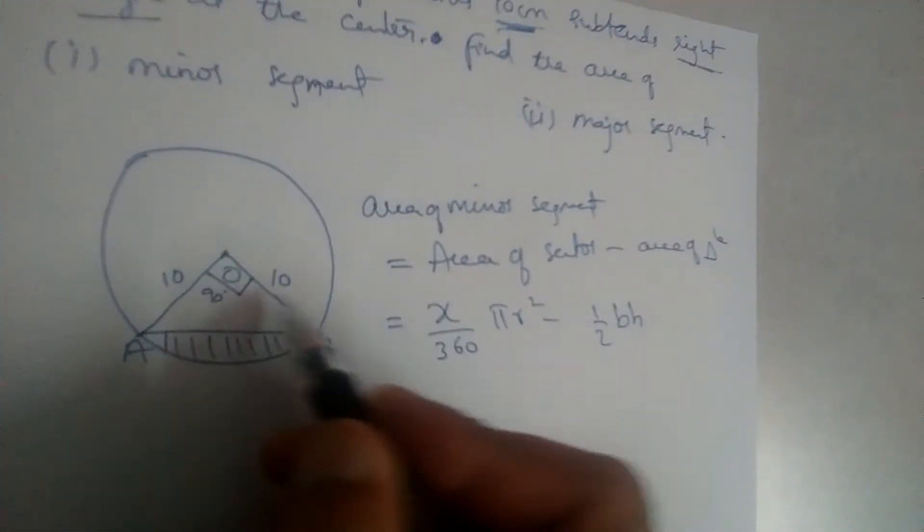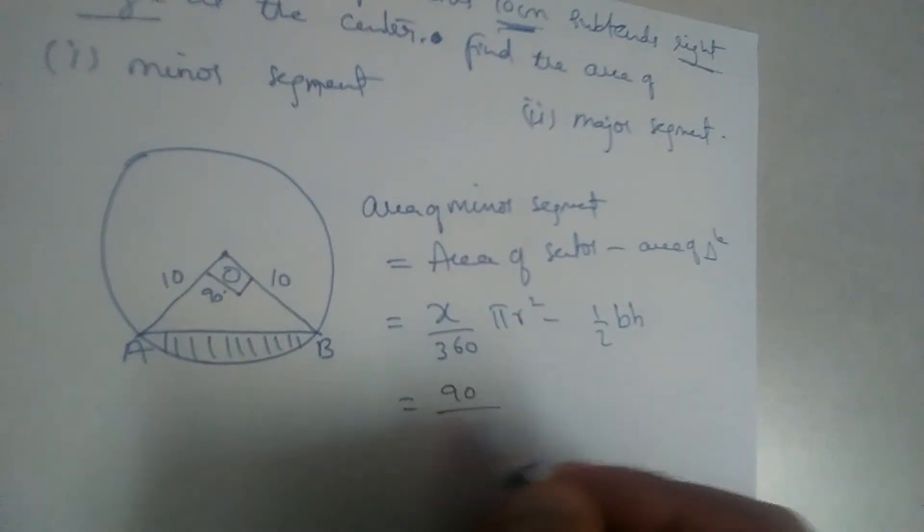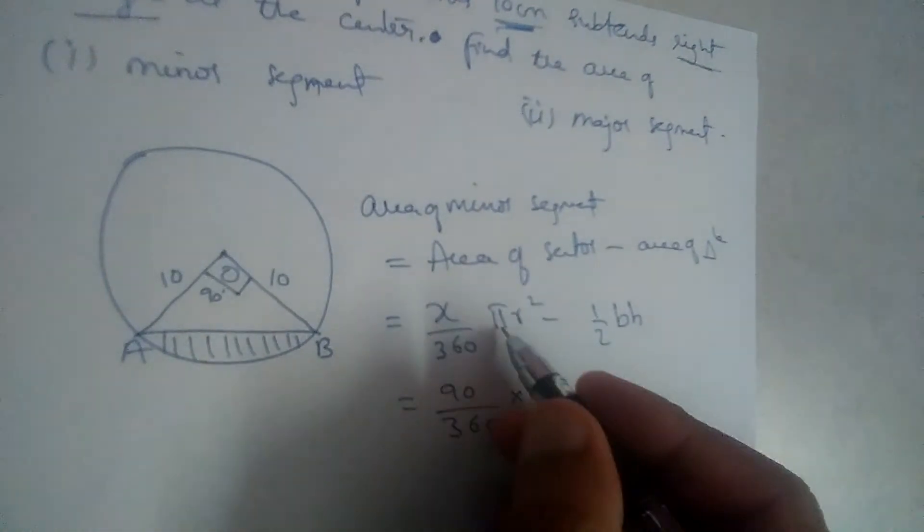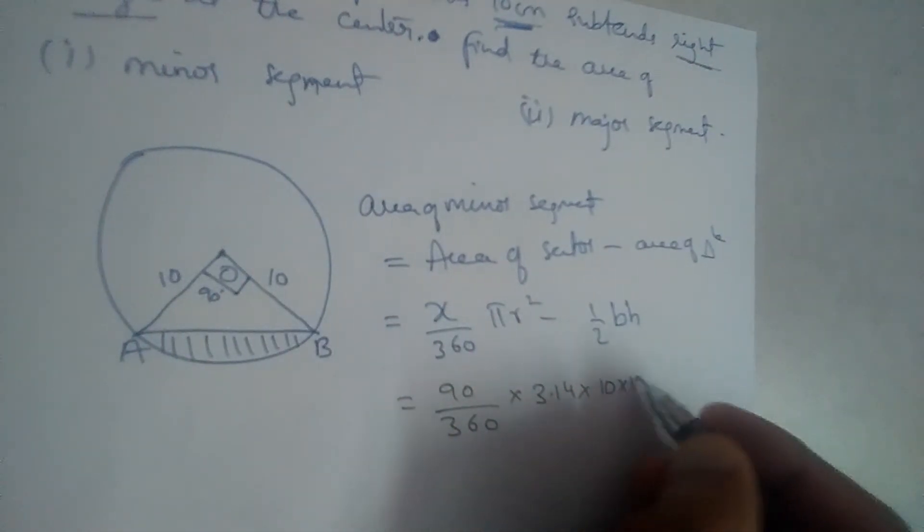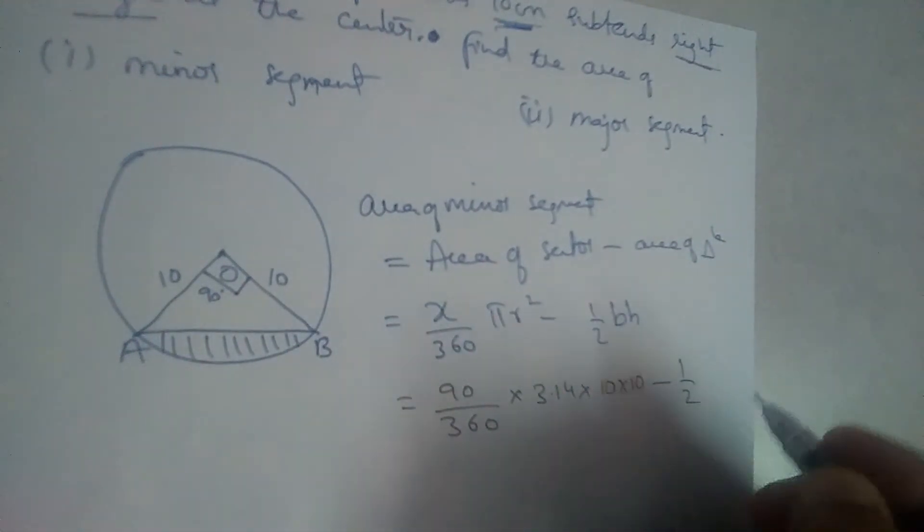So x here is 90 degrees. So 90 by 360 into, let us take pi as 3.14, into r. R is 10. So it is 10 into 10. Minus half into...